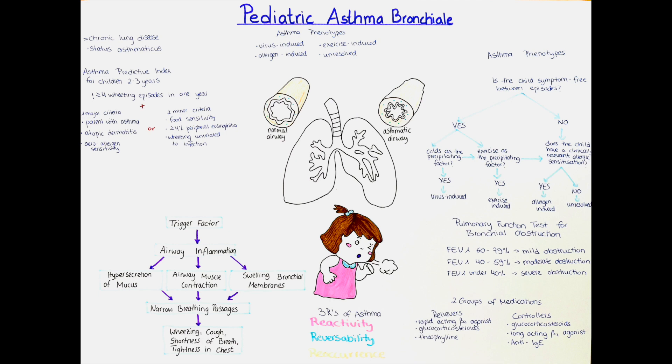Children might also avoid exercise or taking part in sport classes and might have trouble concentrating. Some patients also have signs of allergies, indicating the atopic type of asthma that usually also presents with higher levels of eosinophils. The patient might have atopic eczema or dermatitis, dry skin, irritating conjunctivitis of the eyes, and other identified allergies such as hay fever, allergy to pet hair, or others.